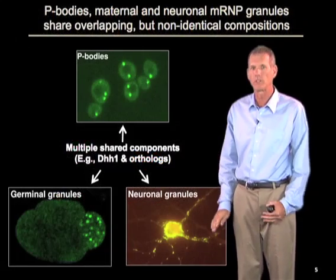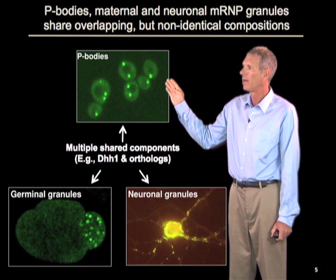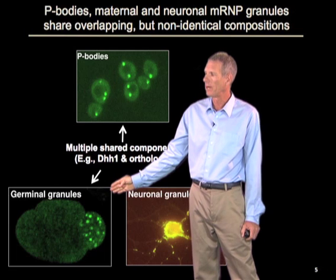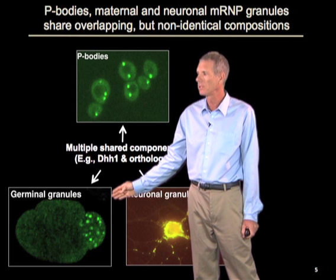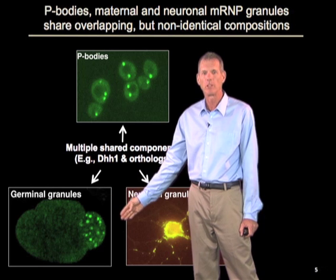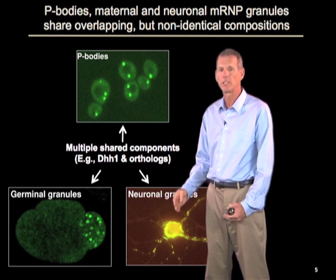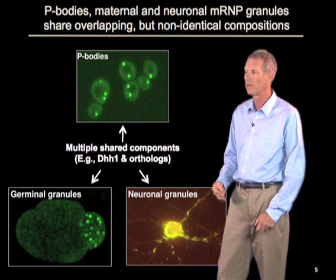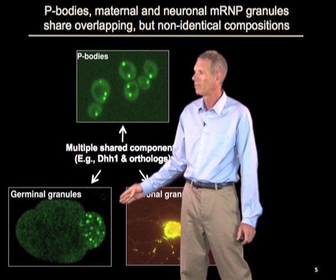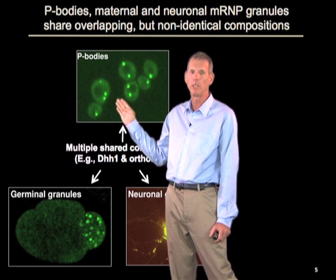A second interesting feature of this cycle is that p-bodies show overlap with other RNA protein granules that are very important in biology. For example, maternal RNA granules, or germinal granules, are complexes of maternal mRNAs and proteins found in the oocytes or embryos of a wide variety of species. Those maternal RNAs are made by the mother, and during development of that embryo, are translated in specific places and at specific times to direct early embryonic development. The storage and subsequent translation at the right time and place is extremely important. Those granules share many components with p-bodies, which are found in every somatic cell examined, from yeast to humans.